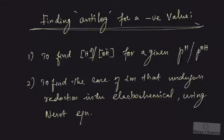In this session we are going to learn how to find the antilog for a given negative value. There are two situations which will warrant this: the first one is we may need to find out the concentration of hydrogen ion or hydroxyl ion if a pH or pOH is given. The second one is we may need to find out the concentration of the ion that undergoes reduction in an electrochemical cell using the Nernst equation.